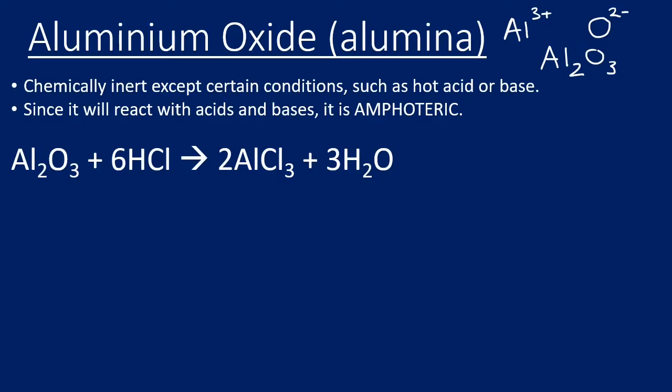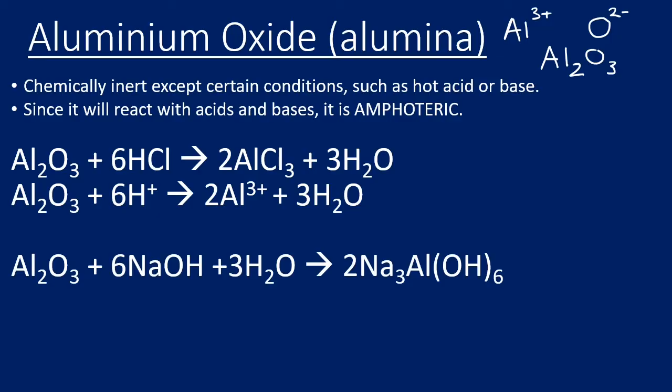Here we look at an equation of alumina reacting with HCl, so that would be hot hydrochloric acid. We can simplify that and have H+, so it doesn't have to be hot hydrochloric acid. That's how it would react with acid. Remember an acid is H+, so we can look at either of those two equations, and I suggest you remember one of those two to show how alumina reacts with acid.